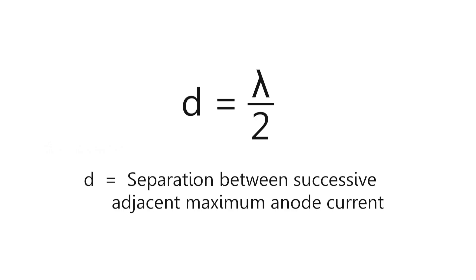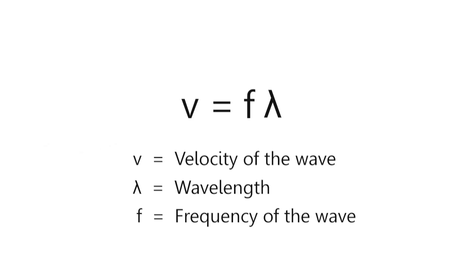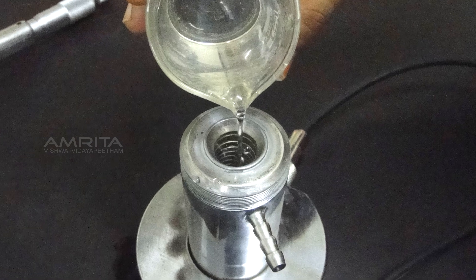If d is the separation between successive adjacent maximum anode current, then d is equal to lambda by 2. We have the velocity v of a wave that is related to its wavelength lambda by the relation v is equal to f lambda, where f is the frequency of the wave. That is, v is equal to lambda f, which is equal to 2df.